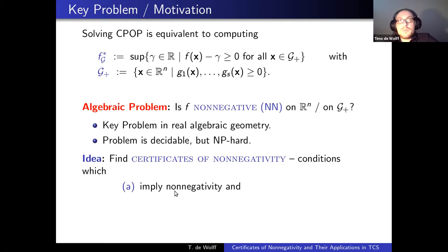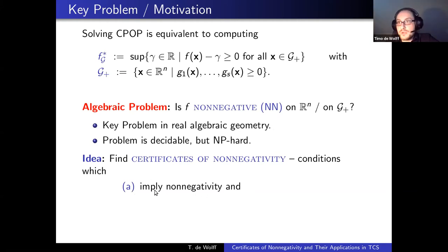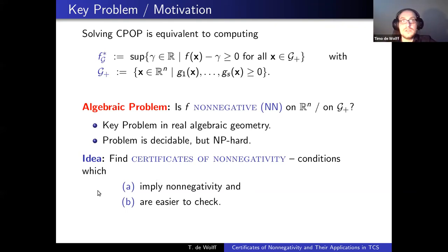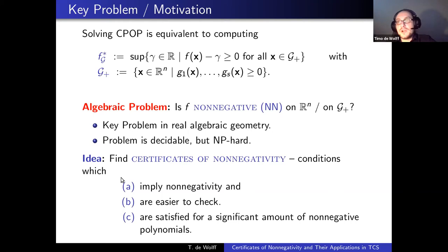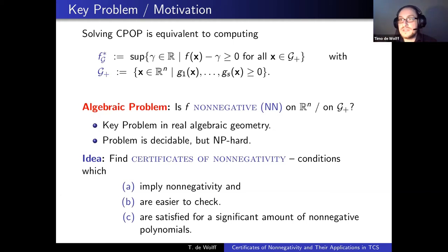We want three things from a certificate of non-negativity. First, it should be a condition on the polynomial that implies non-negativity. Second, it should be easier than deciding non-negativity itself. Third, it should be satisfied for sufficiently many polynomials — if I come up with a completely artificial condition, it's not useful in practice.